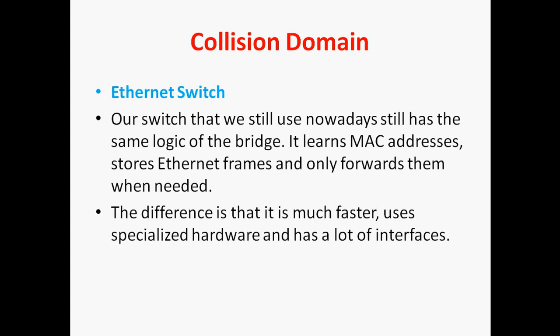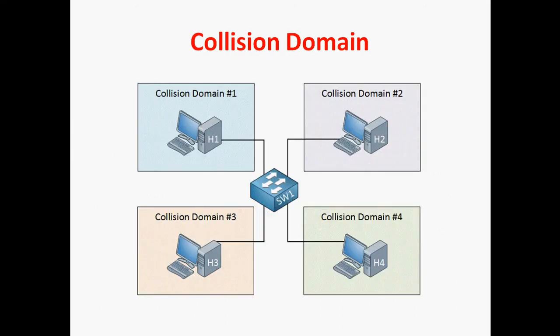Our switch that we still use nowadays has the same logic as the bridge. It learns the MAC address and stores Ethernet frames, only forwarding them when needed. The switch is an intelligent device. In a switch, each and every connected port has an individual collision domain, so we can send and receive data at the same time. The difference is that it is much faster, uses specialized hardware, and has a lot of interfaces.